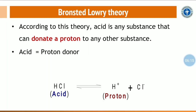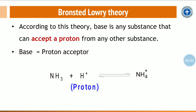To overcome these limitations, Bronsted and Lowry developed a new concept. According to Bronsted-Lowry theory, an acid is any substance that can donate a proton to any other substance — so acid is regarded as a proton donor. A base is any substance that can accept a proton — so base is a proton acceptor. For example, HCl donates a proton (making it an acid), and ammonia (NH₃) accepts a proton to form ammonium ion (NH₄⁺), making it a base.